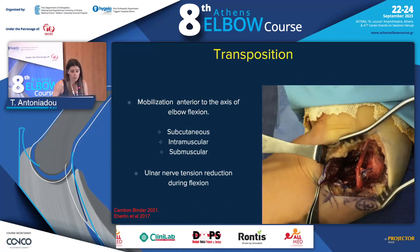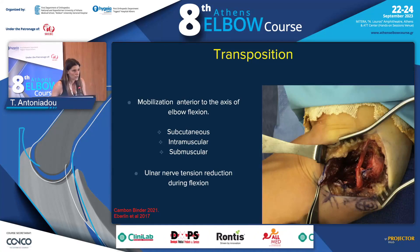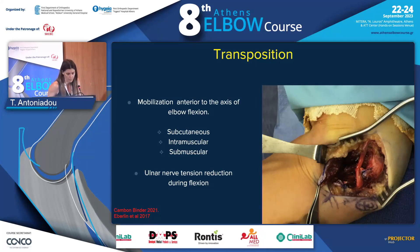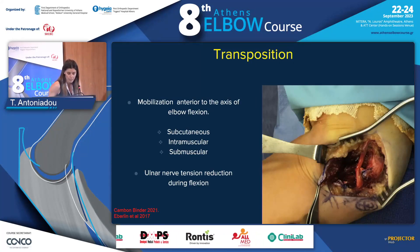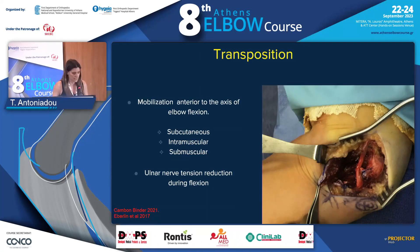Transposition includes the mobilization of the nerve just anterior to the axis of the elbow flexion, and then stabilization, either subcutaneous, intramuscular, or submuscular. The reduction of the tension of the ulnar nerve during flexion is the aim of this technique.